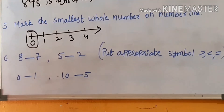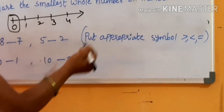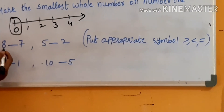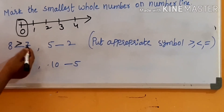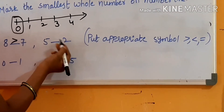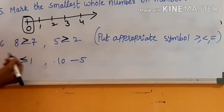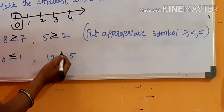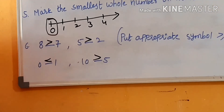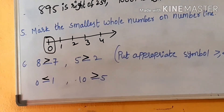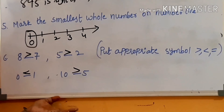Next, put the appropriate symbol — less than, greater than, or equal — to fill in the blanks. Here 8 is greater than 7, so we put the greater than symbol: 8 > 7. Also, 5 is greater than 2. Then 0 is less than 1: 0 < 1. And 10 is greater than 5: 10 > 5.